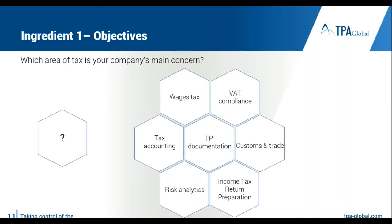When drafting your tax technology plan, the first step is to ask: which area of tax is your company's main concern? Is it TP documentation, which many companies are focused on now? Or maybe wages tax, if your company outsources lots of employees? Or perhaps customs and trade, if you are importing and exporting significant duties? This question is really specific organization by organization. For example, withholding tax can also be a huge issue for some companies. Once this question is answered, you can move to ingredient two.